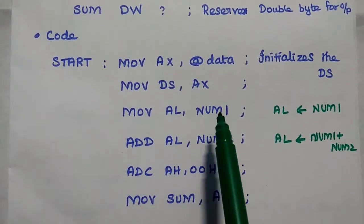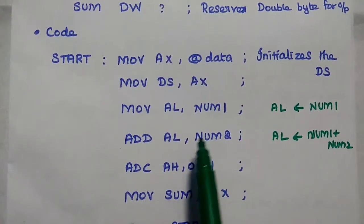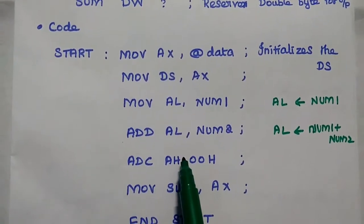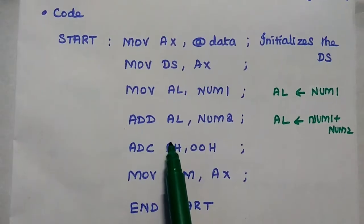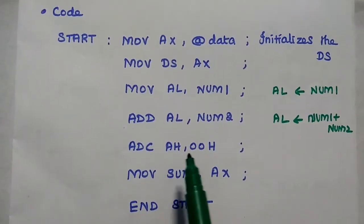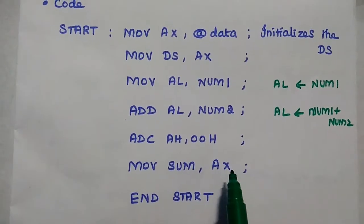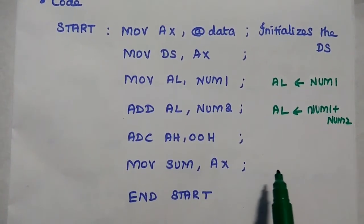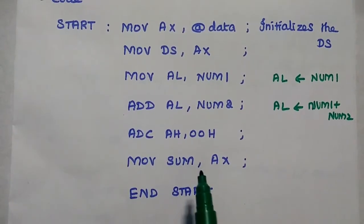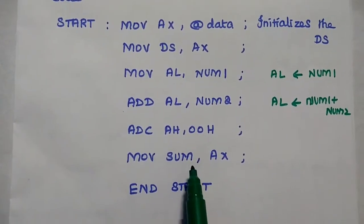After that, we get the first number and move it to the AL register. Then we get the second number and add it with the first number stored in AL. The result will be stored in AL. If there is any carry, we add that value with the AH register. Then we move the AX register — which holds both AH and AL data — to 'sum', which is the double-byte memory location in the data segment where we store the output.